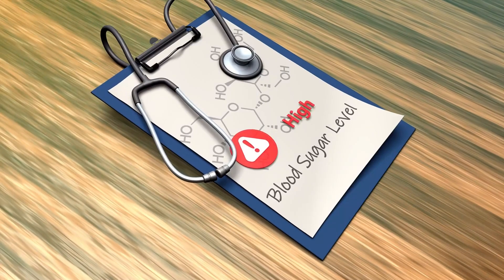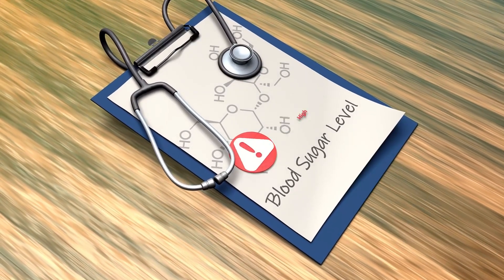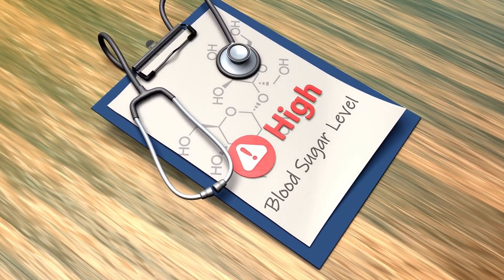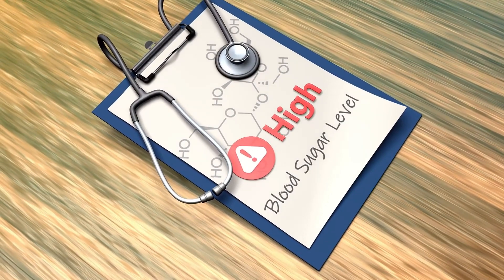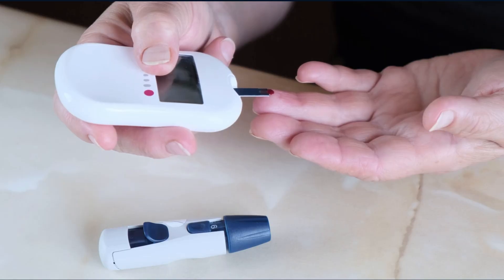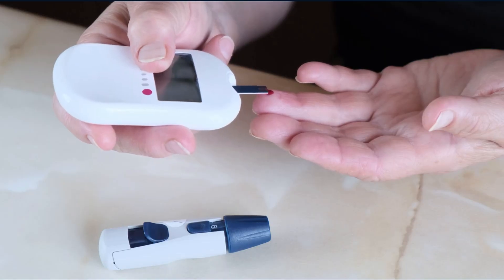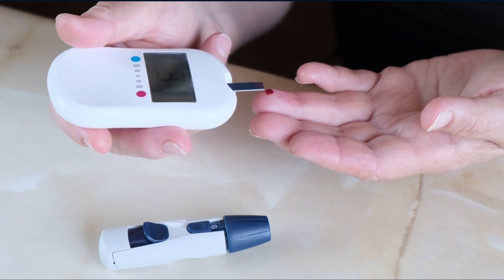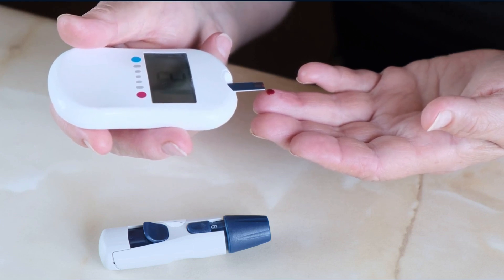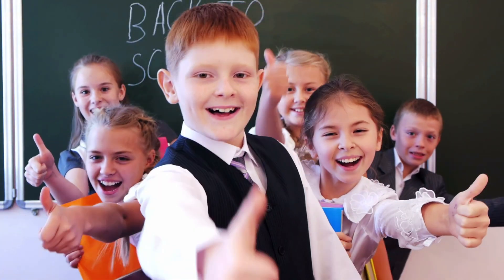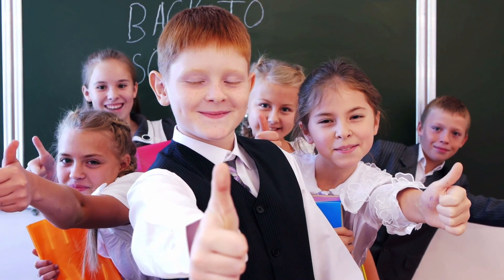So, there you have it. These are the most common complications of uncontrolled diabetes we look for in our patients. Early detection of diabetes and proper control of blood sugar is essential to prevent most of these complications. Hope you guys learned something today. Don't forget to like, share, and subscribe.